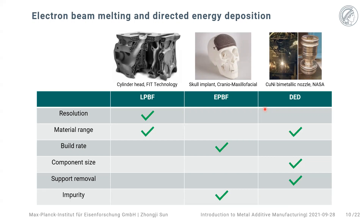If we put all three common techniques on one slide to compare advantages and disadvantages, the easiest way to remember is by their applications. For Laser Powder Bed Fusion, consider a cylinder head designed for a racing car — the main requirements are a very complex structure for structural load and many channels for heat dissipation. Among all techniques, laser PBF has the smallest focused spot size and uses the smallest powder size, giving it the best resolution and a very wide material range.